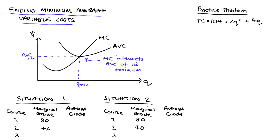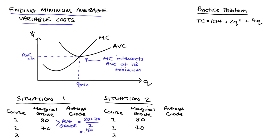For the second course, your marginal grade is 70. If we wanted to find the average grade once you've completed the first and second courses, all we would need to do is sum up the two grades: 80 plus 70 divided by two. We've got two courses, so this equals 150 over two, which equals 75. So that would be your average grade if you just took two courses.